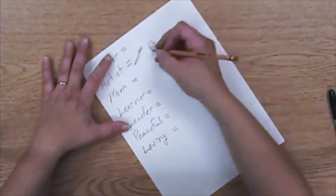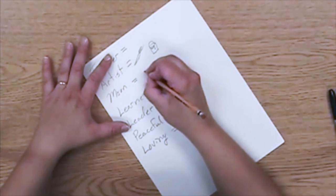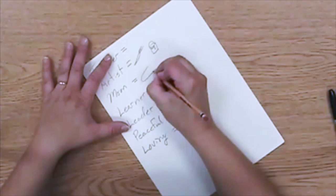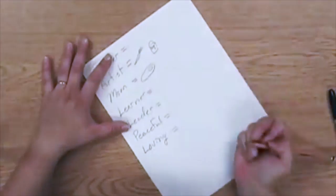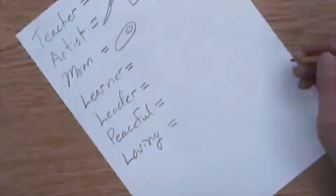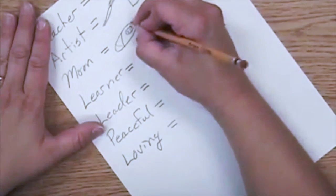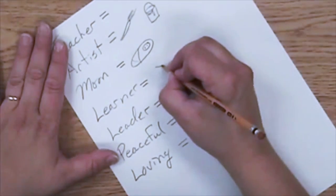You could be a learner or a reader. You are a very good reader but you cannot be a very good book. This is my list of qualities of myself, something that I could be very good or very bad at. These are things that I'm very good at. I'm a very good teacher, a very good artist, very good mom, I'm a very good learner, a leader, I'm peaceful, loving.